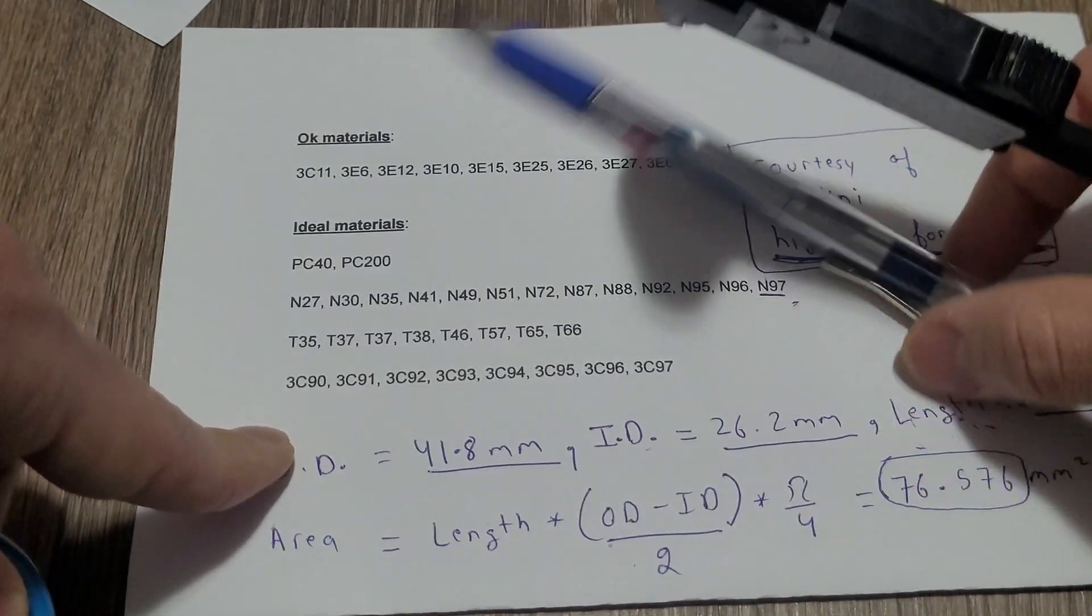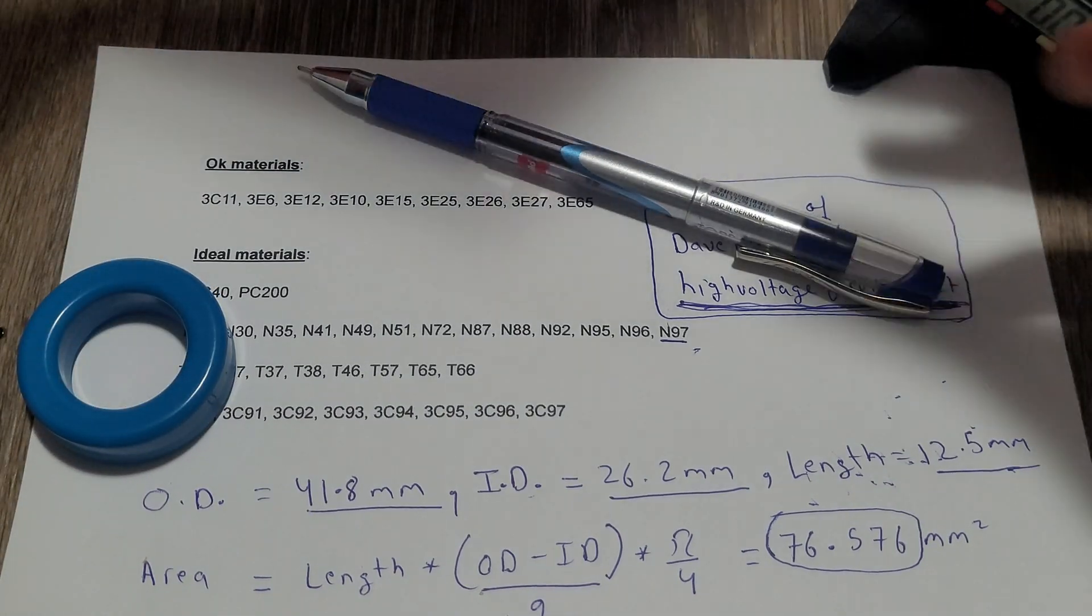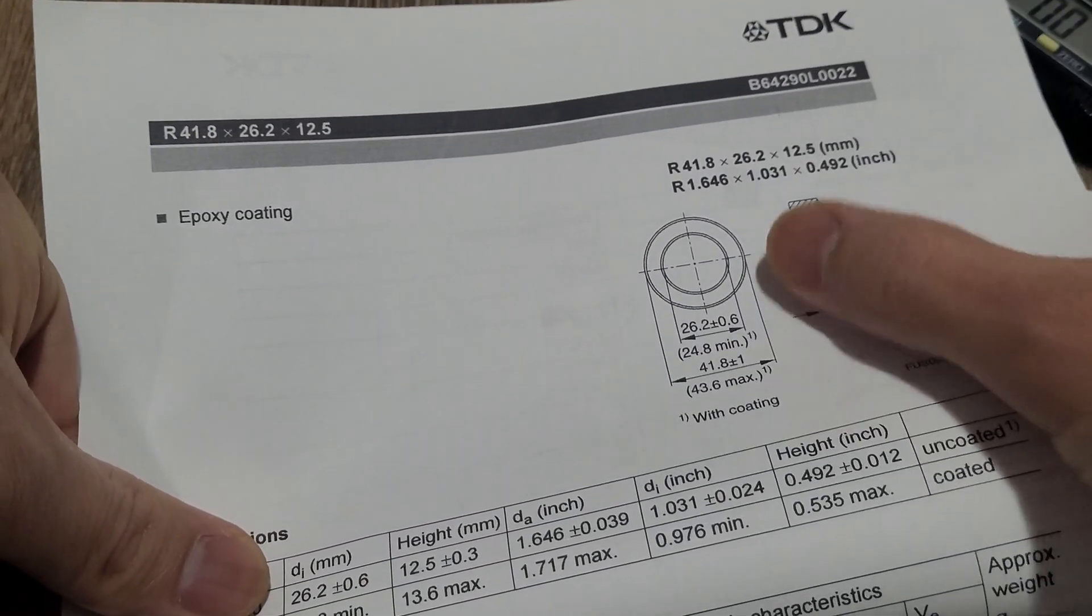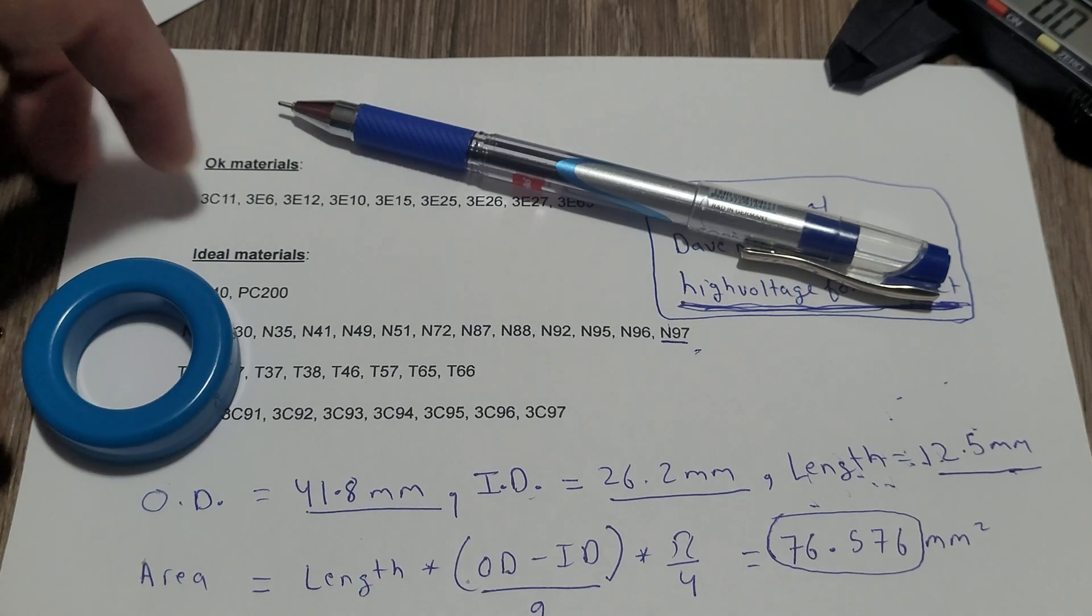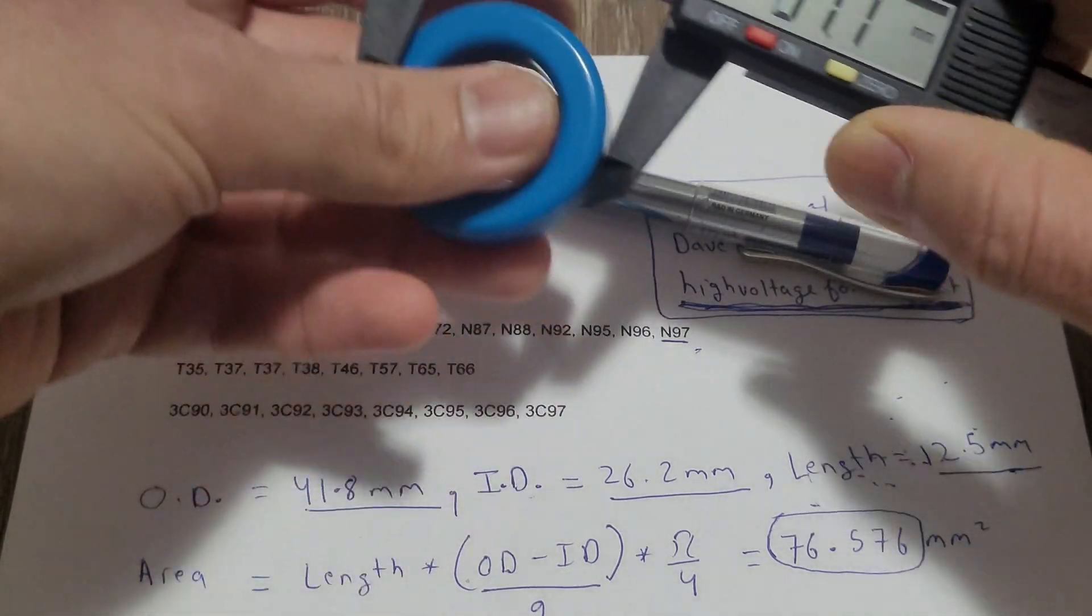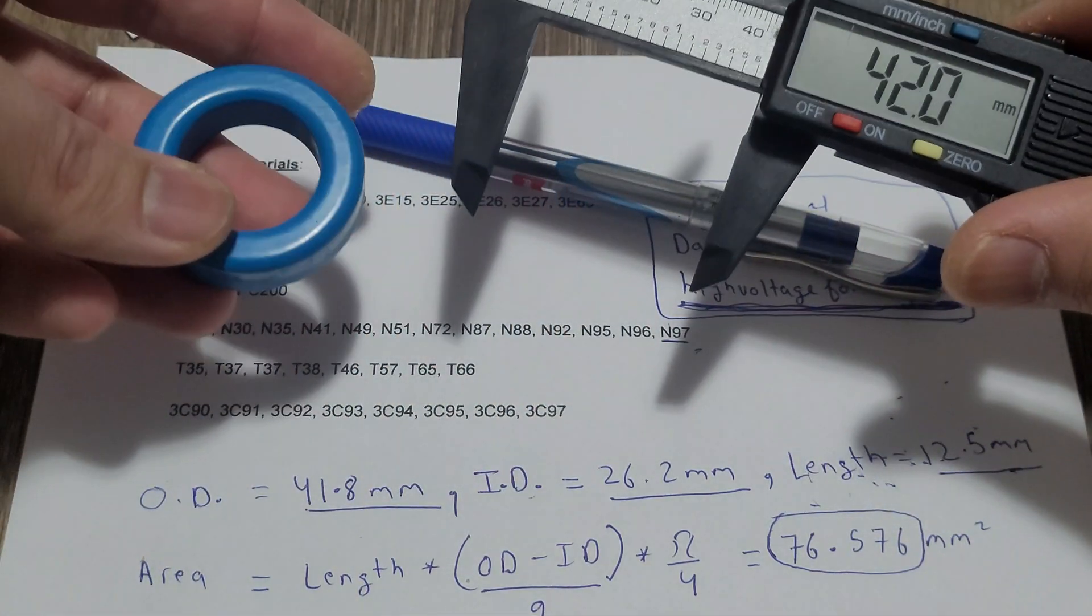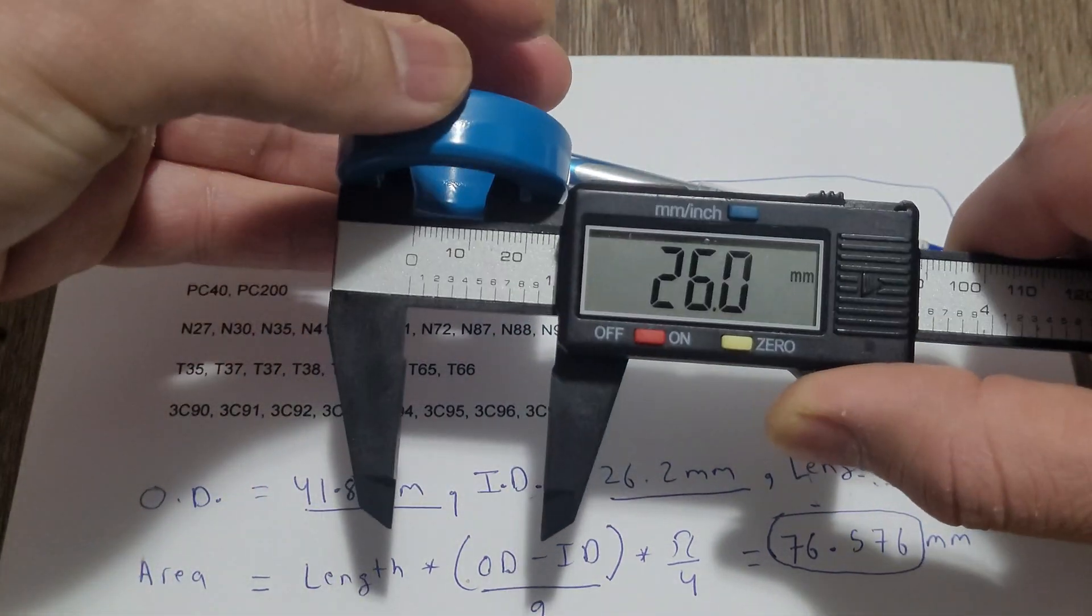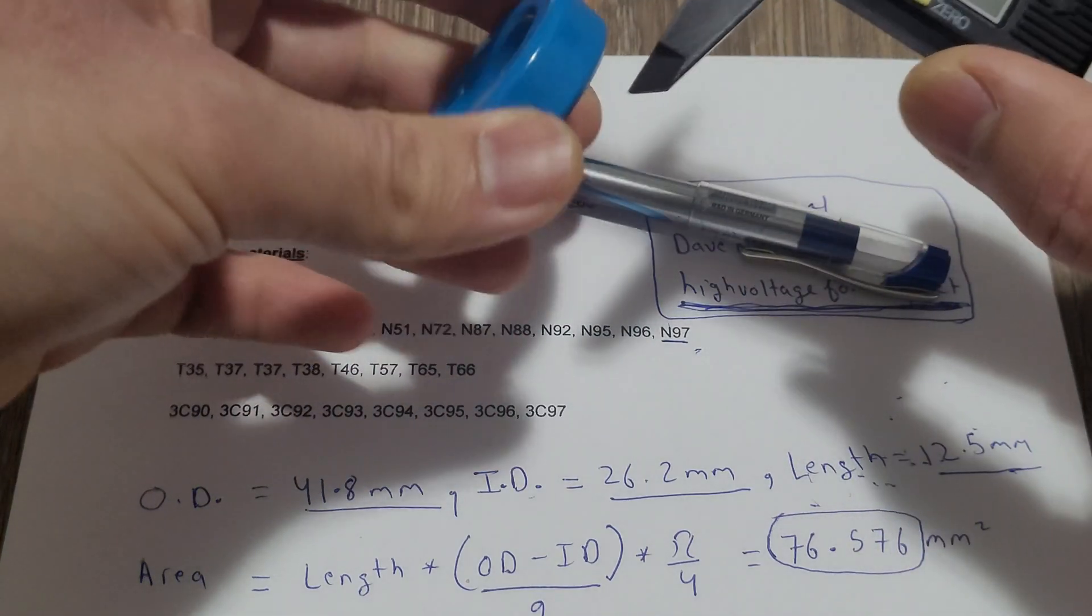I already took some measurements as you can see here. I'm using these default values which are for this core: 41.8, 41.9, 26.2, and 12.5, 12.7.